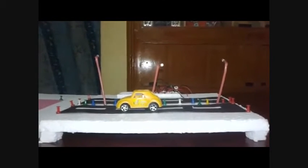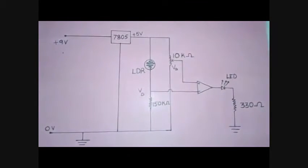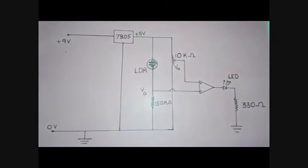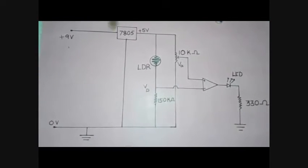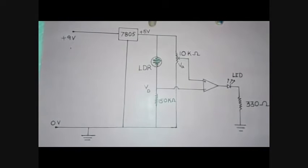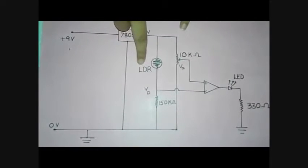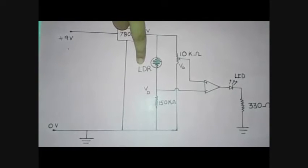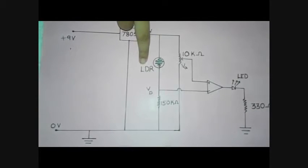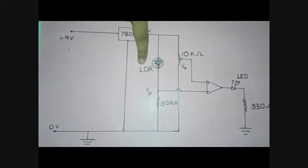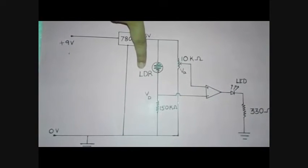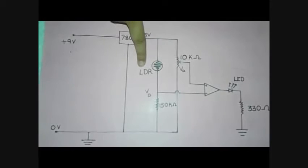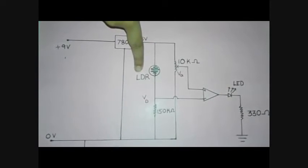Let me explain how it works. This is the circuit diagram of the project. This is IC 7805 — it takes 9V as input and gives 5V as output. This is the symbol for LDR, which means light-dependent resistor. As the name itself suggests, its resistance depends on intensity of light. When the intensity is more, its resistance decreases, and when the intensity is high, its resistance increases.